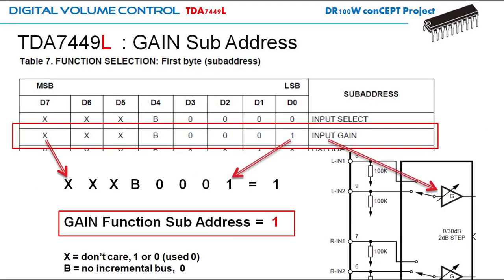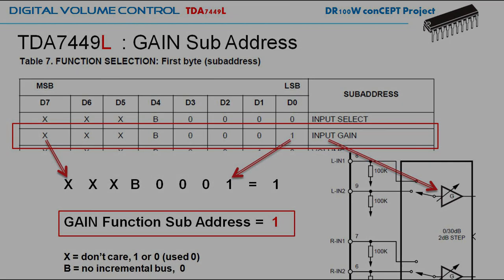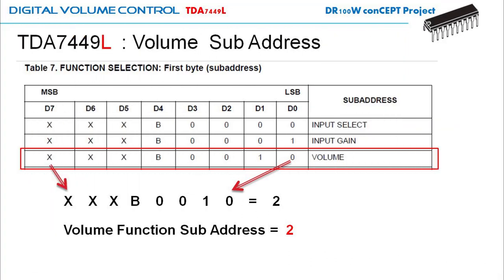Similarly for the gain block, to enable the gain it needs to specify the data for this function to be 1. We are only specifying that we want to use the gain block — not yet specifying how many dB to boost. For the volume controller, I specify the subaddress to be 2, and I am not yet specifying the volume attenuation like 0 dB, minus 3, minus 24, or minus 47 — we will come to that later.